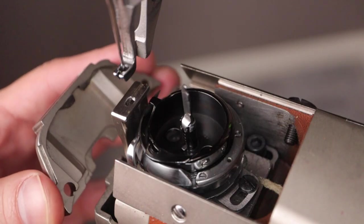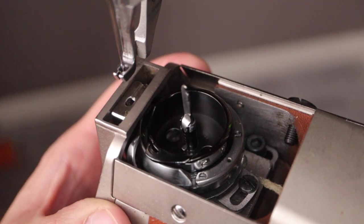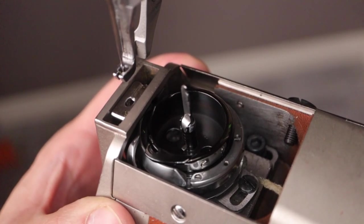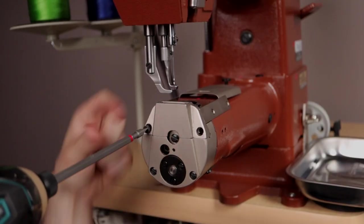Start by pivoting the cover plate into place and have the retention tag fit into the notch. Rotate the hand wheel back and forth to make sure that you can hear it wiggle into place. Now put the screws back into the plate and rethread your machine completely.